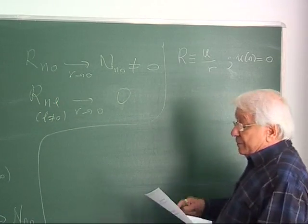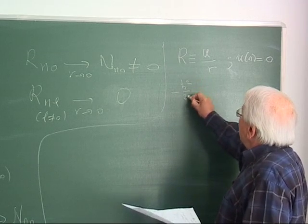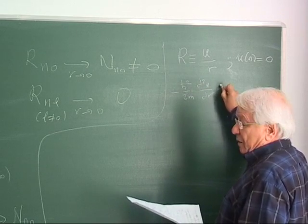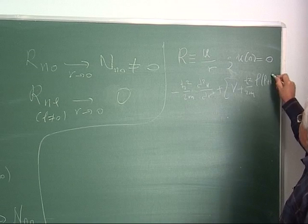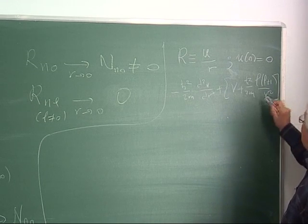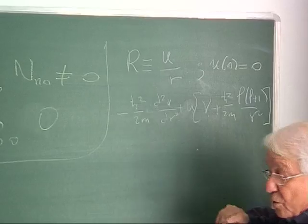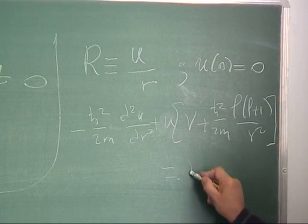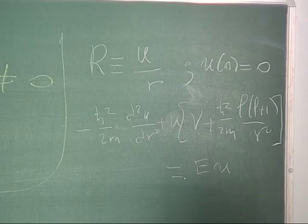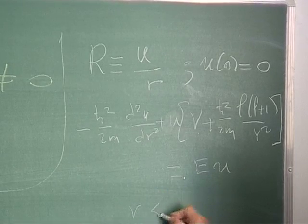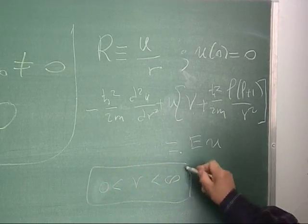The reduced radial equation has the form: −(h-bar²/2m) d²u/dr² + [V + (h-bar²/2m) L(L+1)/r²] u = E u. This is a one-dimensional equation but on the half-line, since r ranges from 0 to infinity. Near the origin, the centrifugal term L(L+1)/r² dominates over the Coulomb potential 1/r and the constant energy term.